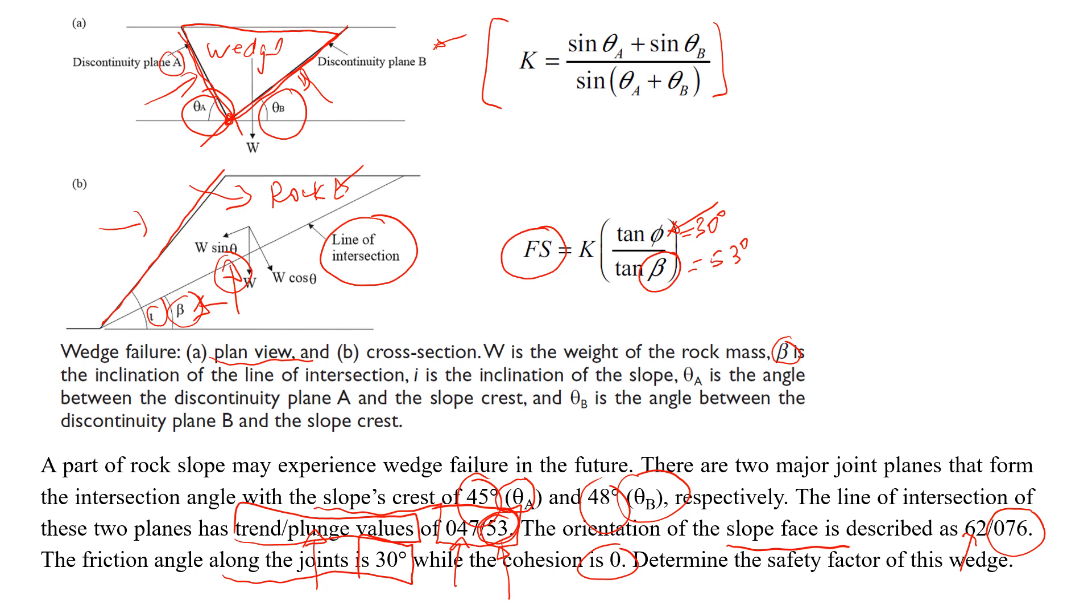And here we have the coefficient K, and to get the coefficient K we just need to look at the geometry of the wedge and its relationship to the major discontinuity planes. So you see that we have sine on the top and the bottom, and these are angles theta A and B, where I defined them.